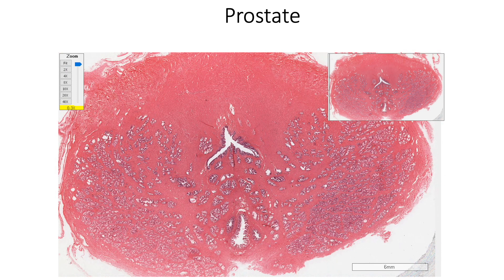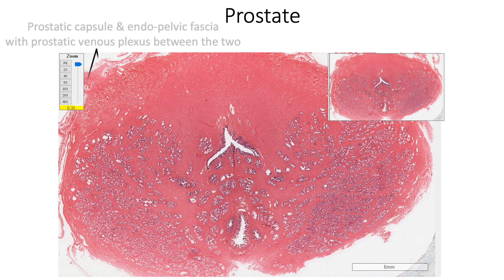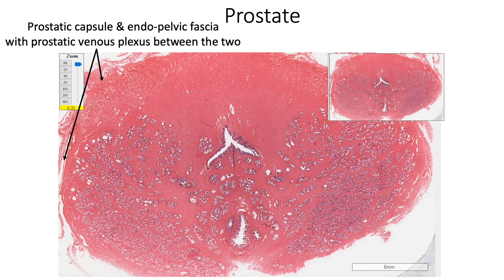Prostate is a walnut-shaped fibromuscular accessory sex gland located in the lesser pelvis below the neck of the urinary bladder. It is covered by a prostatic capsule with a layer of endopelvic fascia outside it; between these two layers we find the venous plexus of prostate. This gland is traversed by the prostatic urethra and a pair of ejaculatory ducts.